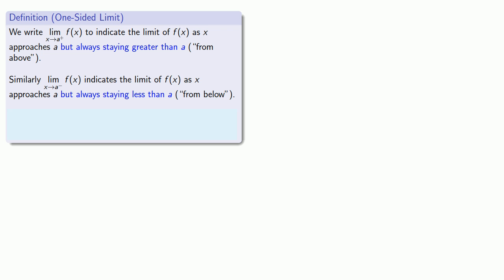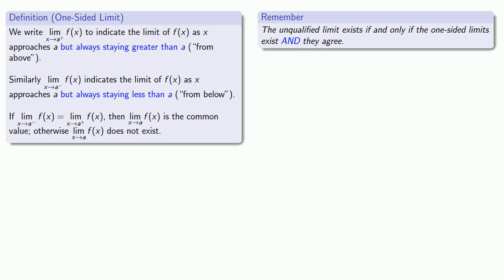If the limit from above and the limit from below are the same, then the limit without a plus or minus is a common value. Otherwise, the limit doesn't exist. And it's important to emphasize that the unqualified limit exists if and only if the one-sided limits exist and they agree.